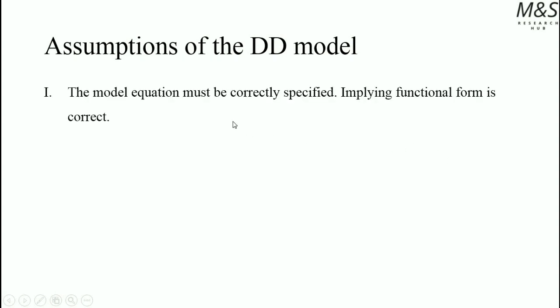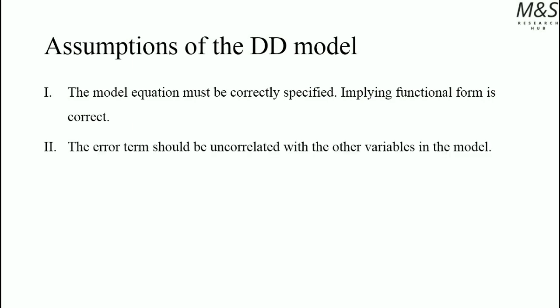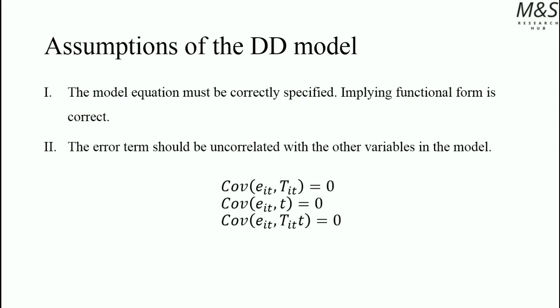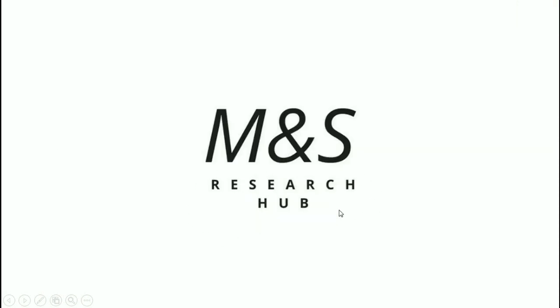Assumptions of the basic difference-in-difference model: the model equation must be correctly specified, implying that the functional form is correct. The error term should be uncorrelated with other variables, which refers to the conditional exogeneity assumption — specifically, the covariance of the error term with the treatment effect variable, the time dummy variable, and the interaction term should all equal zero. Ensuring this gives us the conditional exogeneity assumption. Thank you for watching — this was an MMS Research Hub video. My name is John Riveros, and I hope you liked it.